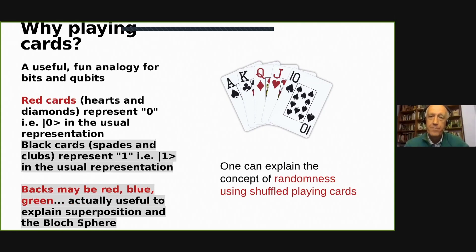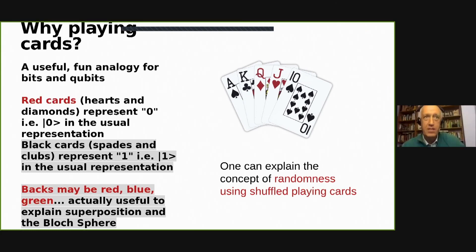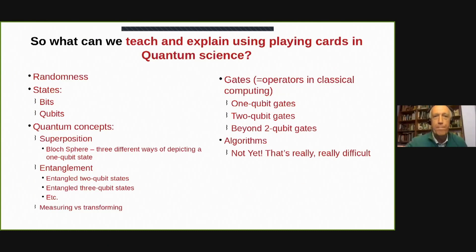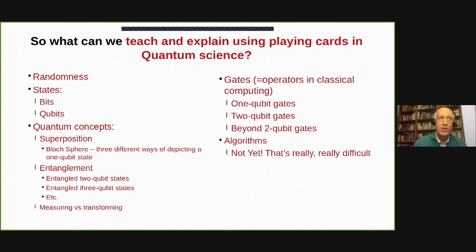But for quantum computation, we use the properties of cards. Red and black cards that stay as 0 and 1. Red cards may be just state 0 and black cards may be state 1. And also the backs can be different. So what can we teach and explain about playing cards in quantum science? Randomness, different states being qubits, quantum concepts like superposition, and entanglement that are at the basics of quantum computations.